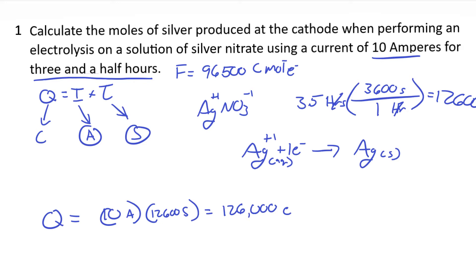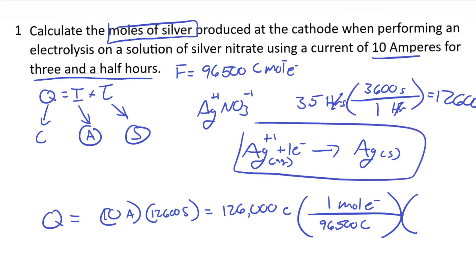And again we want moles of silver that we're producing. We know that based on Faraday's constant that there are 96,500 Coulombs for every mole of electrons that we're producing. And based on our half equation, it's one mole of electrons for every mole of silver we're producing. So at that point we would do this math. So it ended up being 126,000 divided by 96,500 and then times one. So nothing changes. So our answer is 1.31 approximately moles of silver.